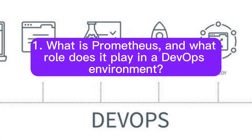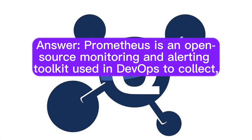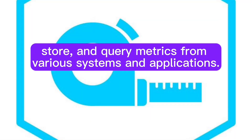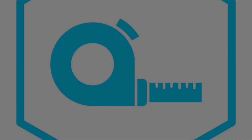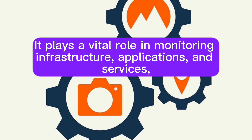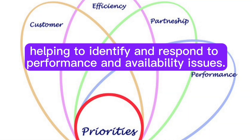What is Prometheus and what role does it play in a DevOps environment? Prometheus is an open-source monitoring and alerting toolkit used in DevOps to collect, store, and query metrics from various systems and applications. It plays a vital role in monitoring infrastructure, applications, and services, helping to identify and respond to performance and availability issues.